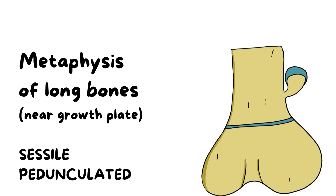Sessile is the type in which there is no stalk — the osteochondroma is directly attached to the bone in a flat configuration. Pedunculated type is the one where there is a stalk, as shown in this picture, where the osteochondroma arises from the bone connected through a stalk. Sessile type is more commonly associated with malignant transformation than pedunculated type.